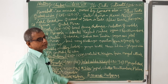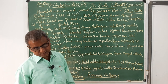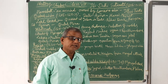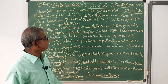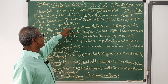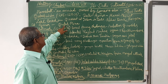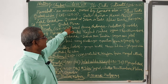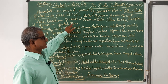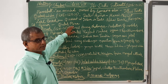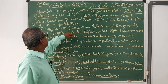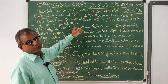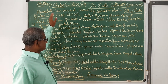Most importantly, the construction of the Qutub Minar, the highest minaret at that time, was started by him, and it was later completed by Iltutmish.